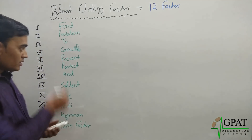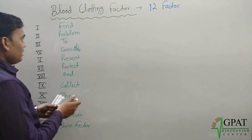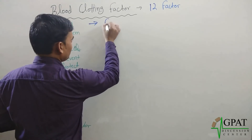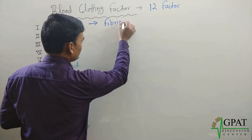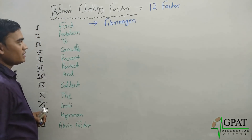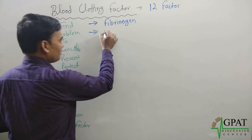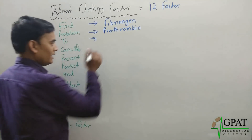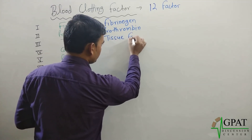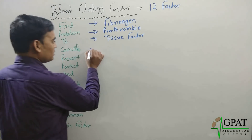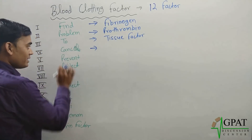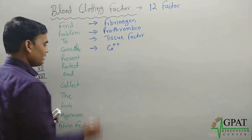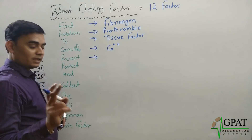Now let's decode the mnemonic. 'Find' — F stands for Fibrinogen (Factor I). 'Problem' — P stands for Prothrombin (Factor II). 'To' — T represents issue Factor III. 'Cancel' — the first C stands for Calcium (Factor IV).